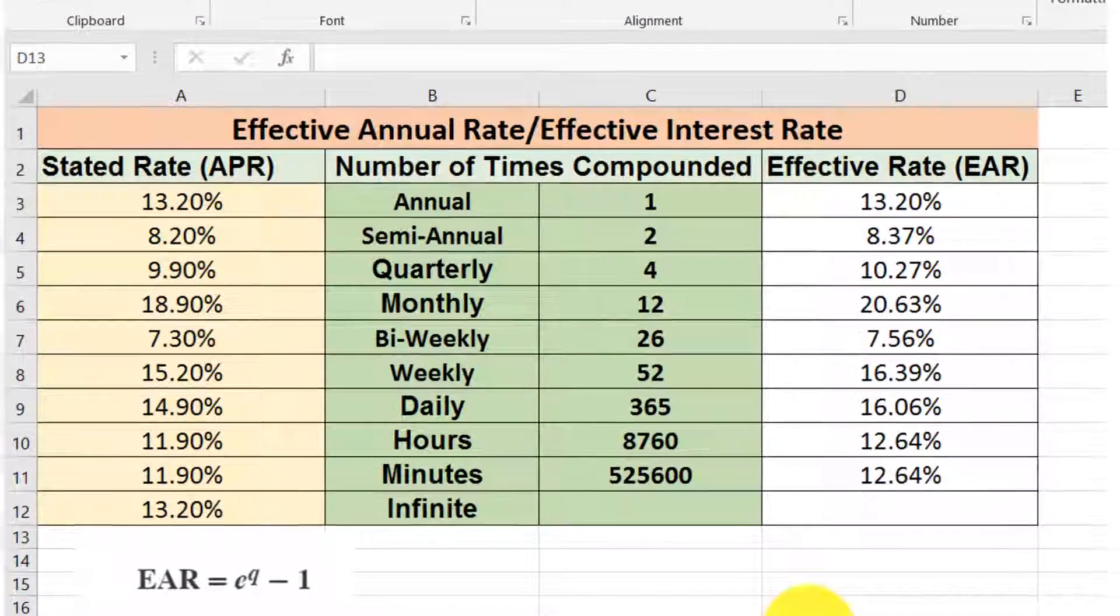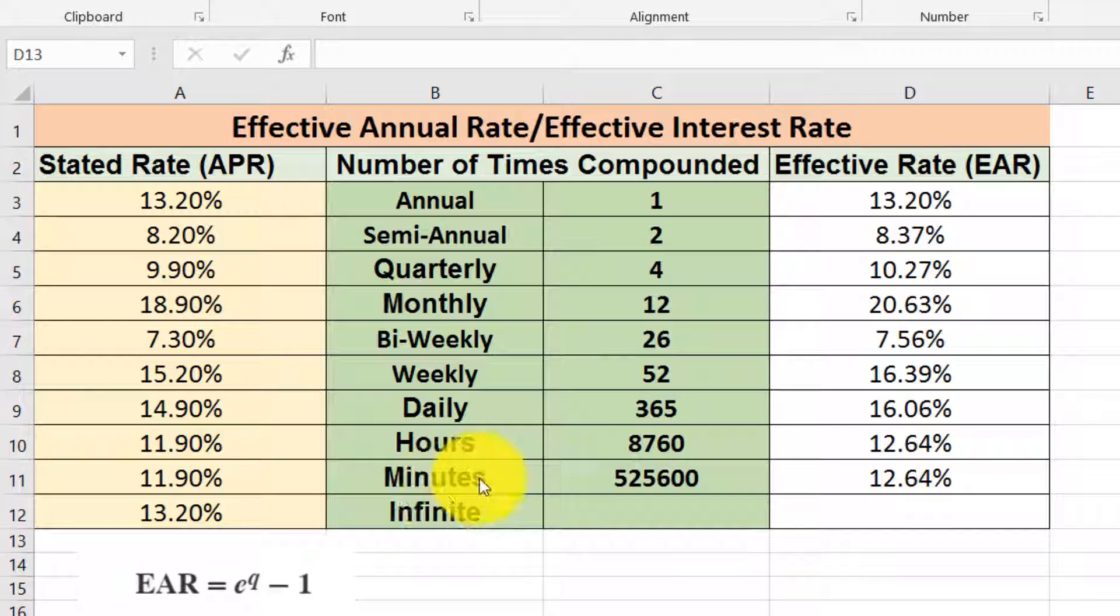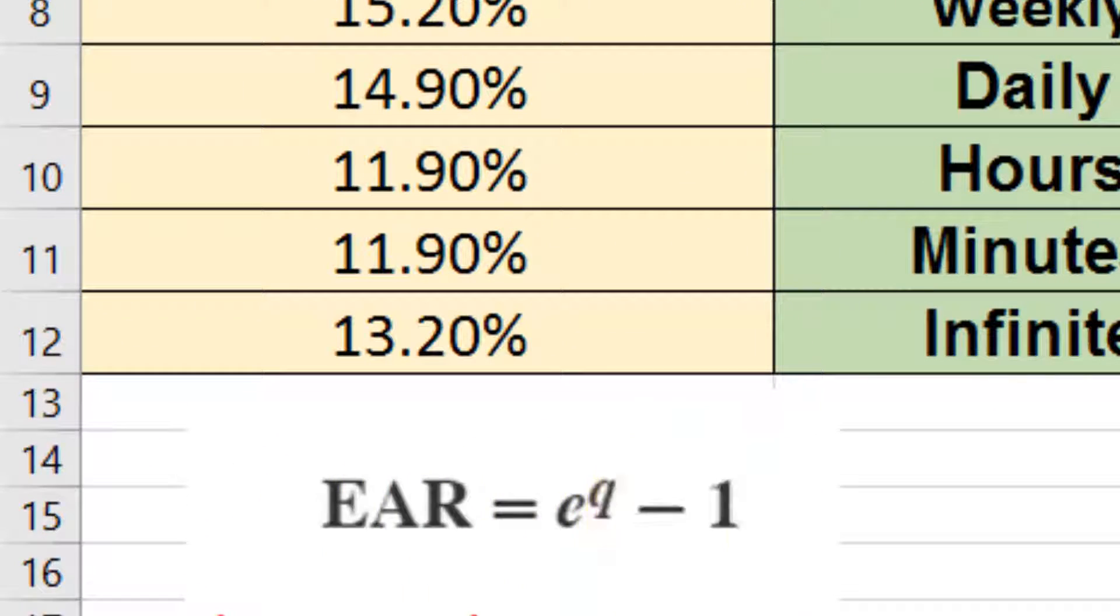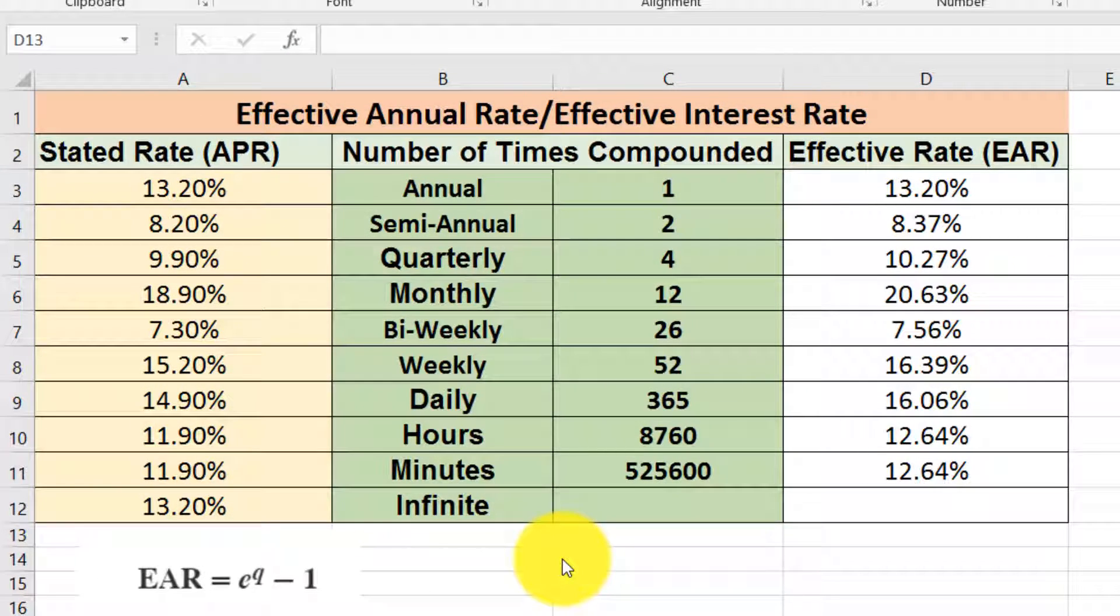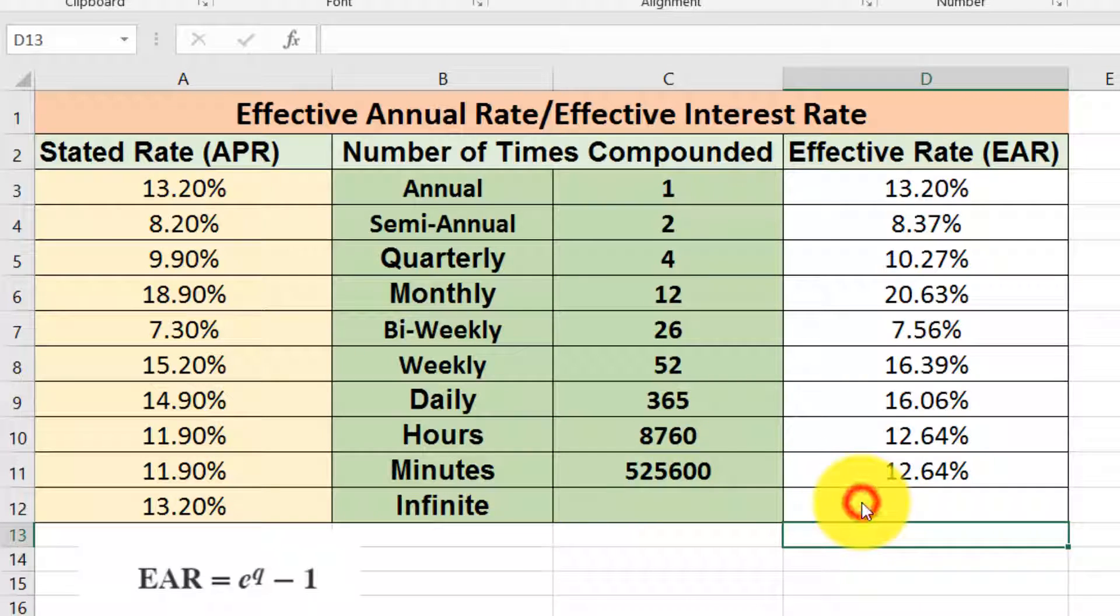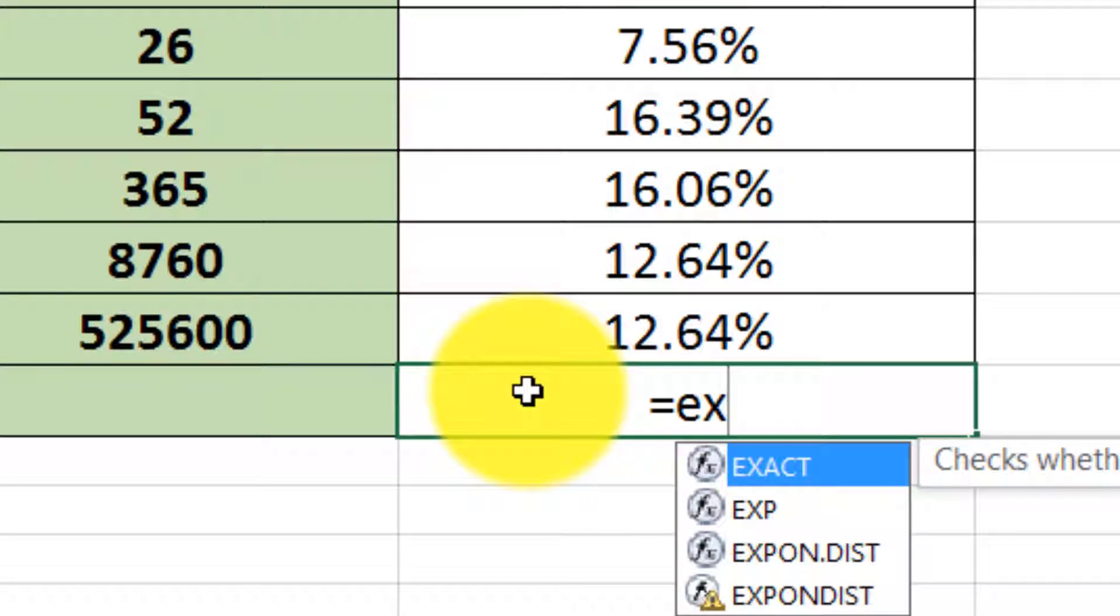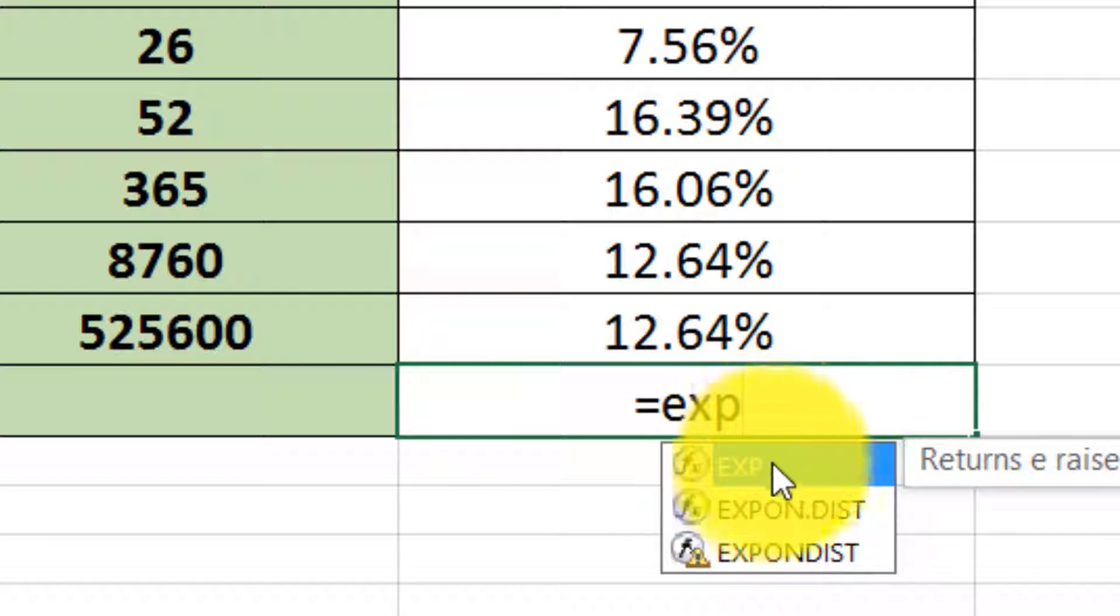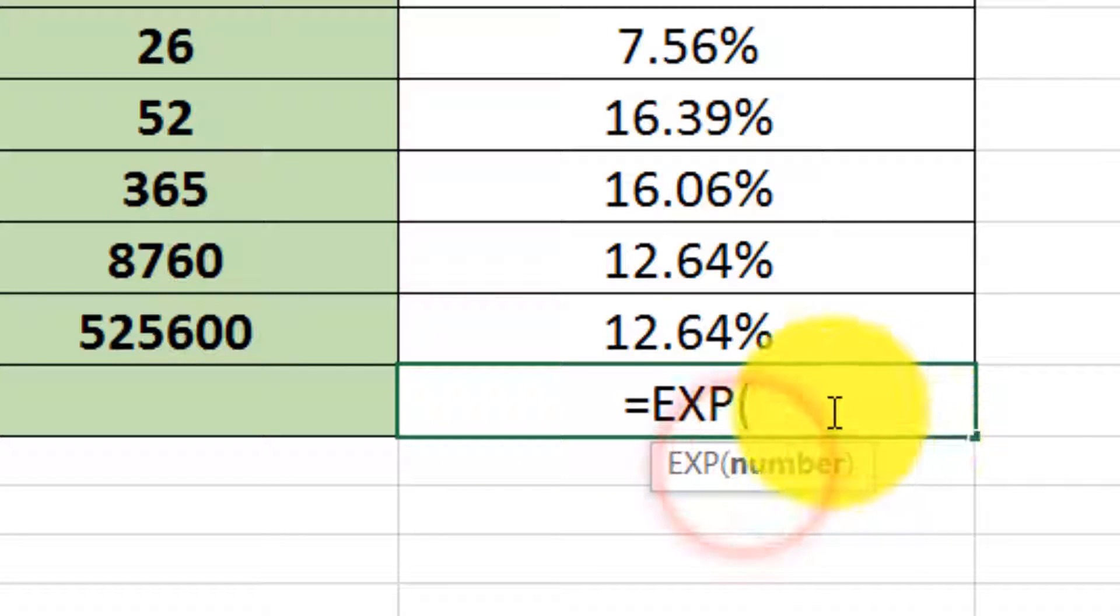If we need to calculate the effective interest rate in the case of infinite situation, we use this way. For the calculation with infinite, we use the exponent function. First we type equal, then type EXP. It will open the exponent function. I select this function, then I type here a number of one, then take the power of the stated rate.